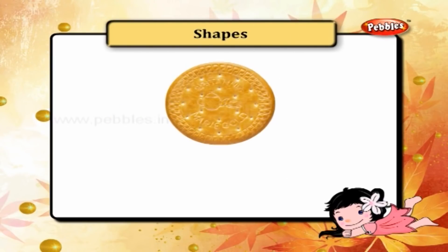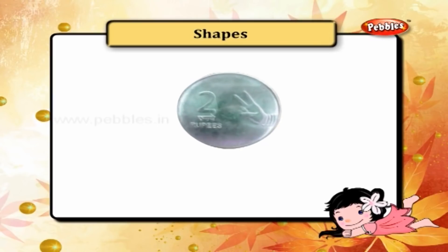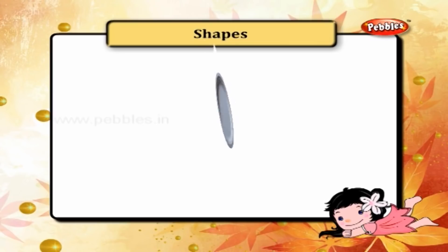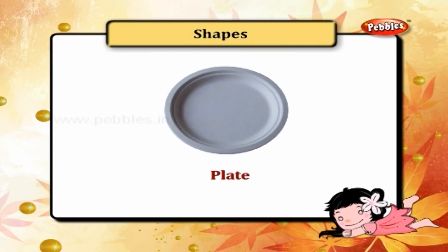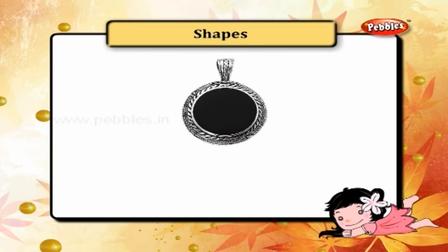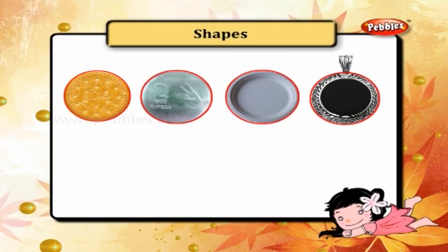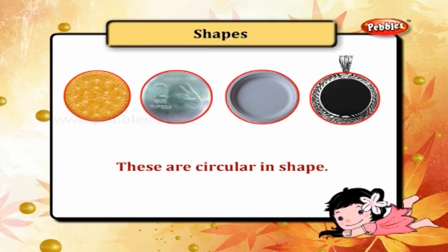This is a biscuit. This is a coin. This is a plate. And this is a pendant. These are circular in shape.